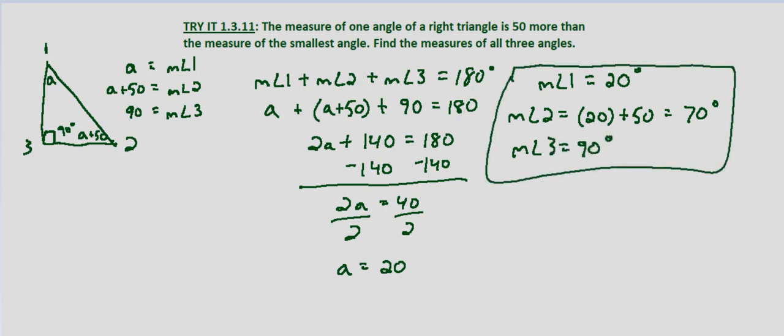Now to check this real quick, just to make sure, 20 plus 70 plus 90, does that equal 180? 20 plus 70 is 90. 90 plus 90 is 180, so it does indeed equal 180, which verifies the measurements of our three angles in this triangle.